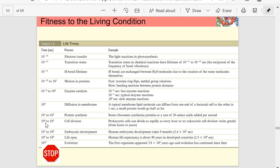Cell division, 10 to the 4th to 10 to the 5th seconds. Embryonic development, 10 to the 7th to 10 to the 8th seconds. And a lifespan is 10 to the 5th to 10 to the 9th seconds. So, this is the order of magnitude for the lifetime of some of these events.